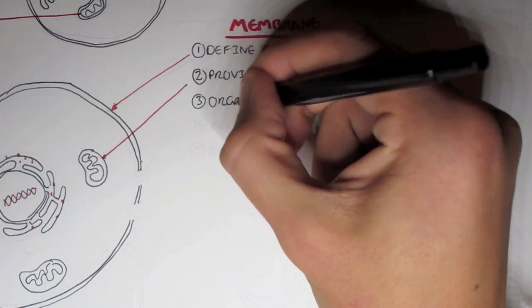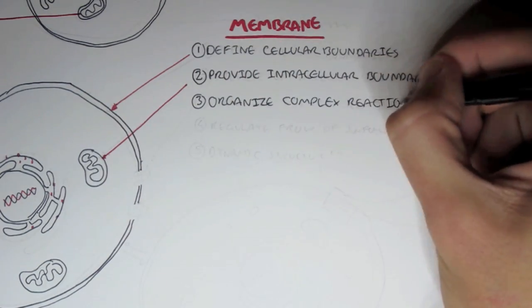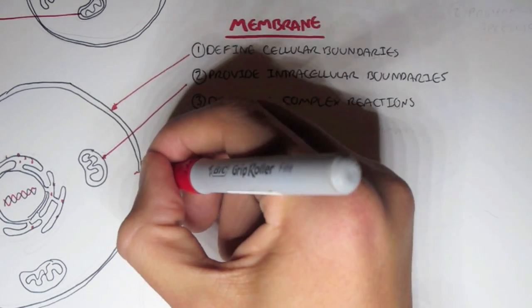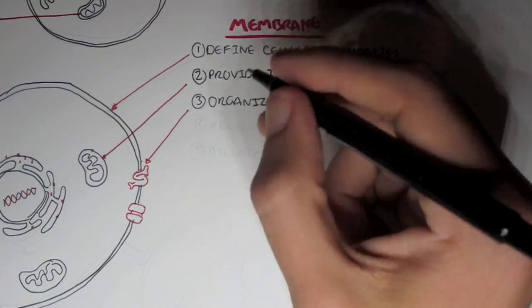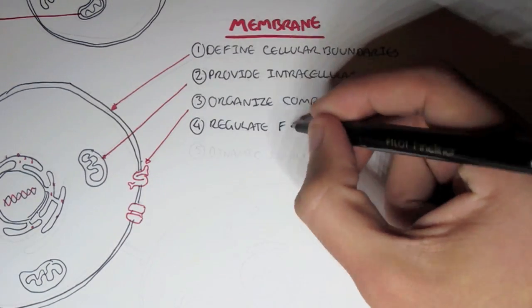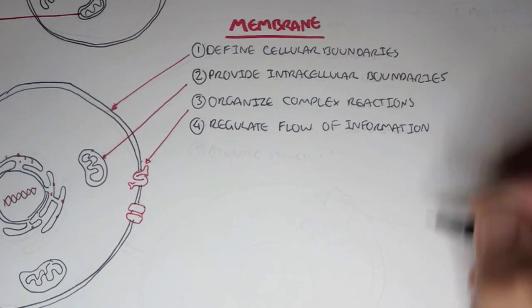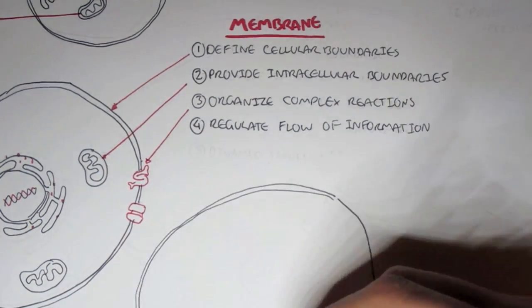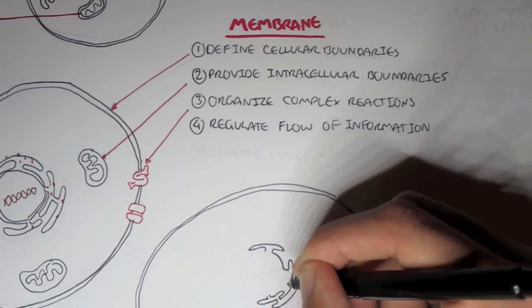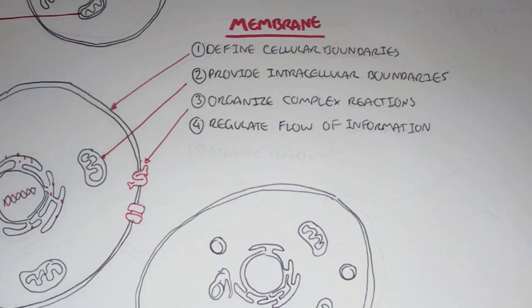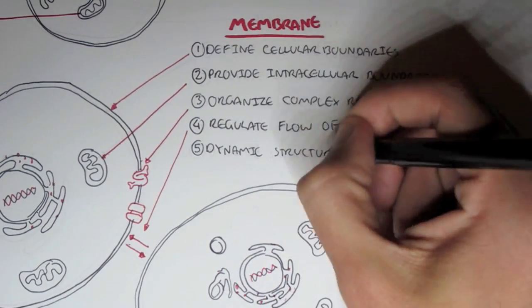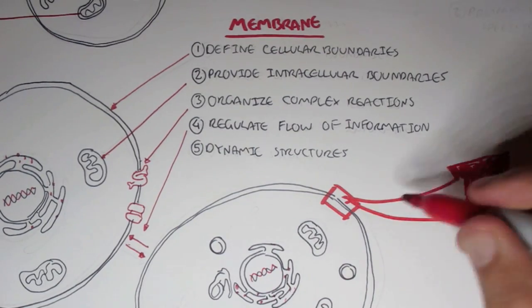Now three, it can organize complex reactions such as the receptors, ion channels for example. Four, it can regulate flow of information. So it can send out signals as cytokines and communicate with other cells, receptors etc. And lastly, five, they have dynamic structures.